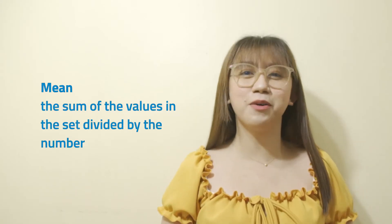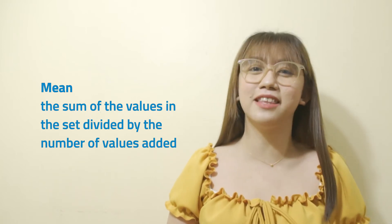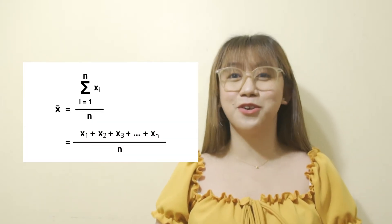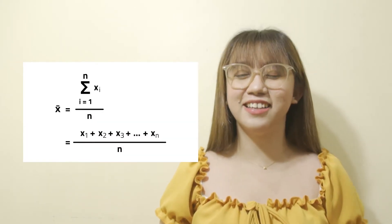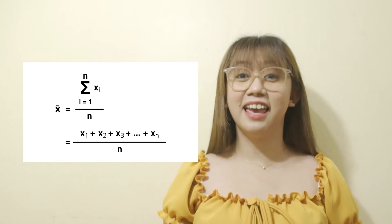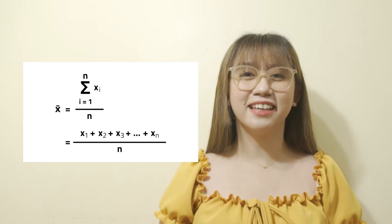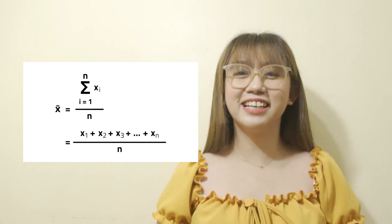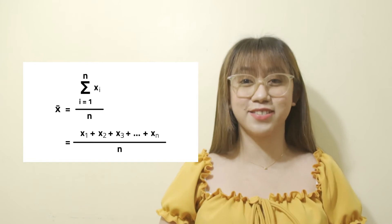Let's discuss them one by one. The mean for ungrouped data is the sum of the values in the set divided by the number of values added. In symbol notation, the formula for the mean of ungrouped data uses x-sub-i for the items or values, i for ranges from 1 to n, n for the number of items, and sigma — a Greek letter — which is used to signify a sum.